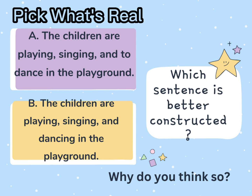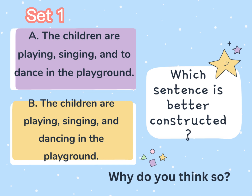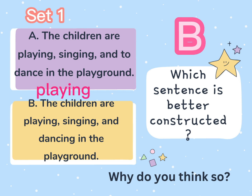Pick what's real. Try to choose what for you is the correct sentence structure and defend your choice. This is Set One. A: The children are playing, singing, and to dance in the playground. B: The children are playing, singing, and dancing in the playground. Which sentence is better constructed? Why do you think so? Sentence B is better constructed than sentence A because of the parallelism of the words used: playing, singing, dancing.